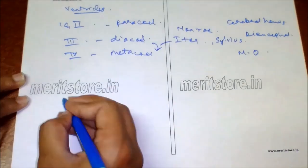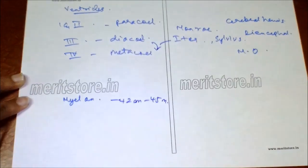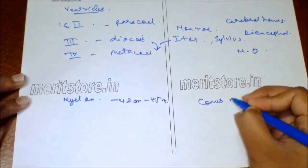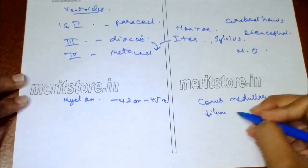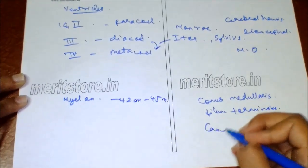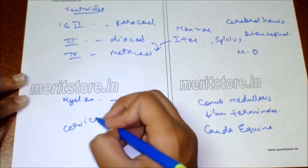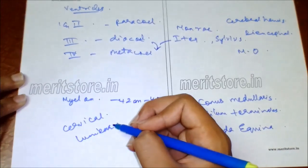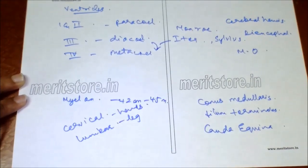The spinal cord (mylon) is about 42–45 cm long and 2 cm thick, lodged in the neural canal of the vertebral column. After the second lumbar vertebra it tapers to form the conus medullaris and ends in a thread-like structure called filum terminale. Beyond this is a fibrous horse-tail-like structure of meninges known as cauda equina. There are cervical and lower lumbar swellings; the cervical plexus supplies nerves to the hand and the lumbar plexus to the legs. Functions include conduction of nerve impulses and control of spinal reflexes.